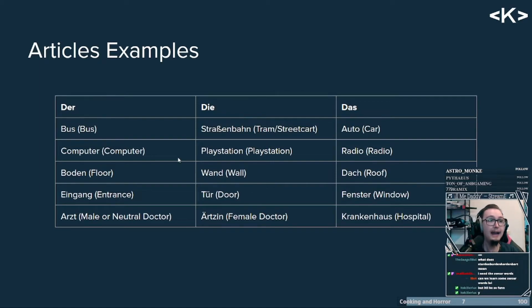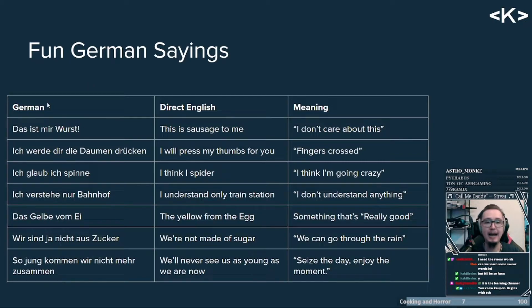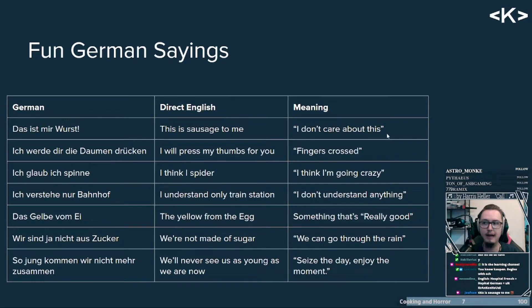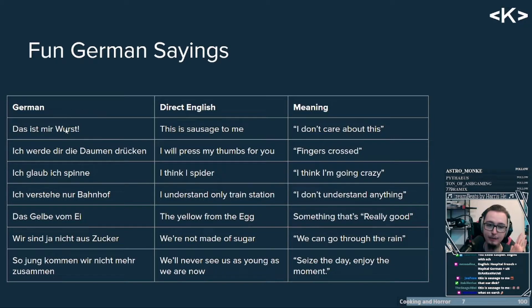Now for the fun part — fun German sayings. First: 'das ist mir Wurst.' The direct translation is 'this is sausage to me,' and the meaning is 'I don't care about this.' Pretty crazy since we love our Wurst in Germany. 'Das ist mir Wurst' means I don't care about this.